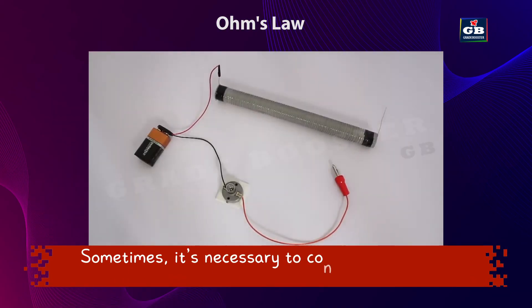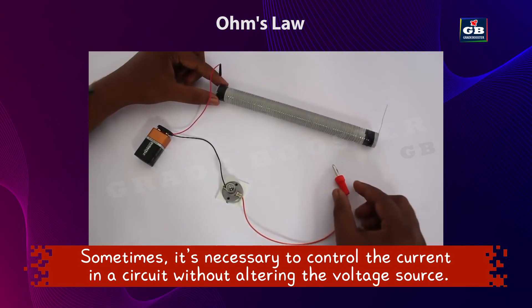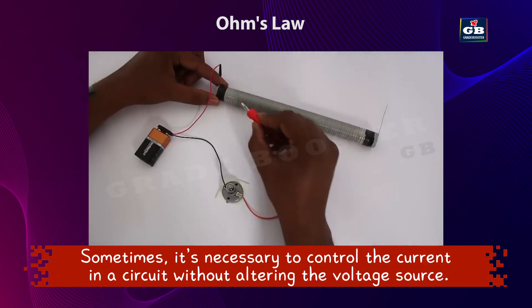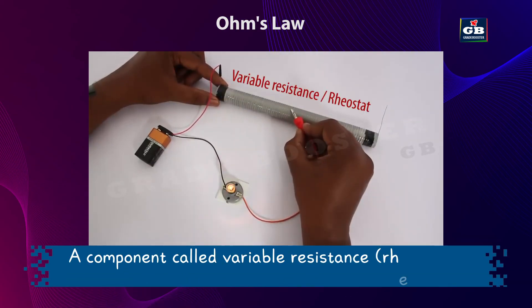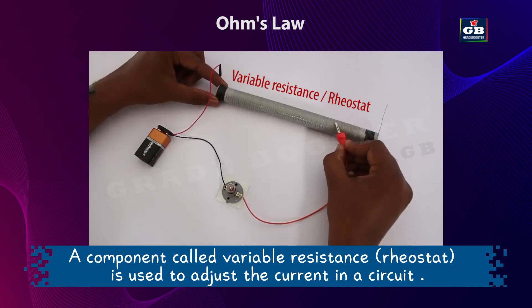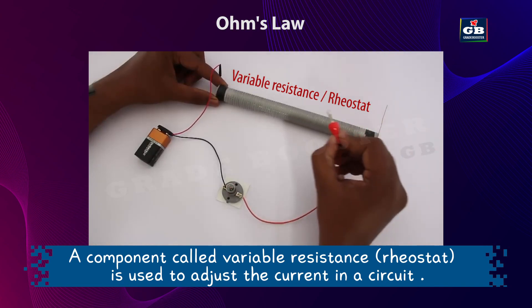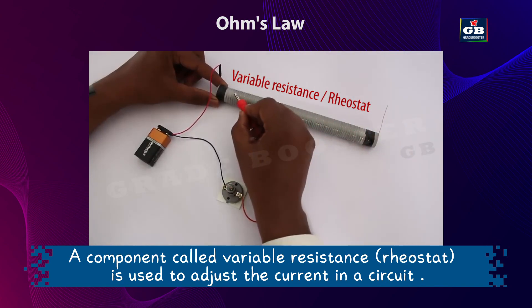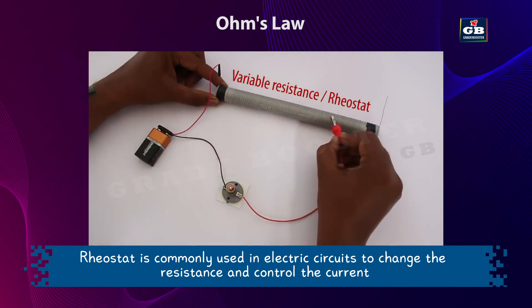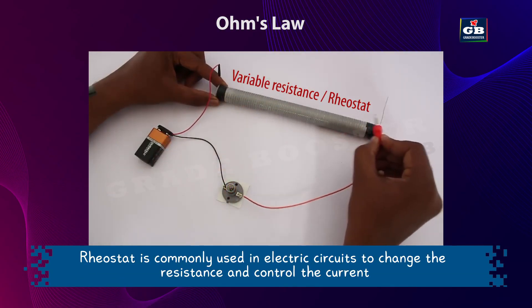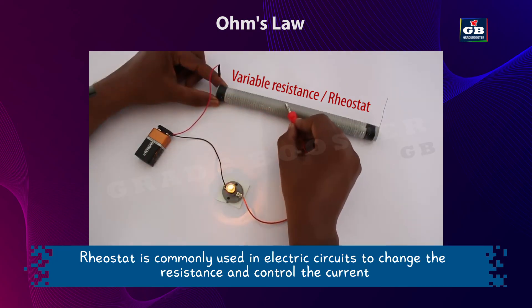Sometimes, it is necessary to control the current in a circuit without changing the voltage source. In this situation, a component called variable resistance or rheostat is used to adjust the current in a circuit. Rheostat is commonly used in electric circuits to change the resistance and control the current.